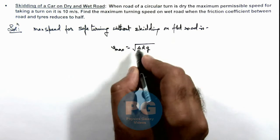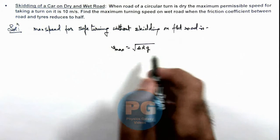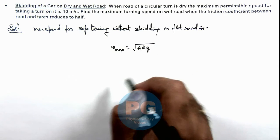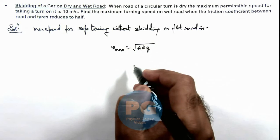Where μ is the friction coefficient between flat road and tires, r is the radius of turn, and g is gravitational acceleration.